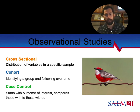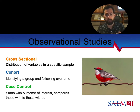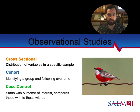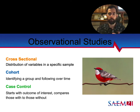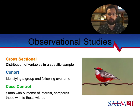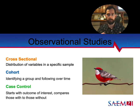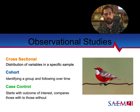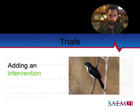For cohort studies, we're identifying a group and following them over time. We enroll people who have chats as pets, watch them over time, and see who wins the lottery. Compared to cross-sectional, we can see how many people start to win the lottery over time, but we're still not really able to prove causality — we can only say having a chat is associated with winning. For case-control, we start with the outcome of interest and retrospectively compare those with and without it. We identify lottery winners, figure out who has chats versus not, giving us a picture of the association.